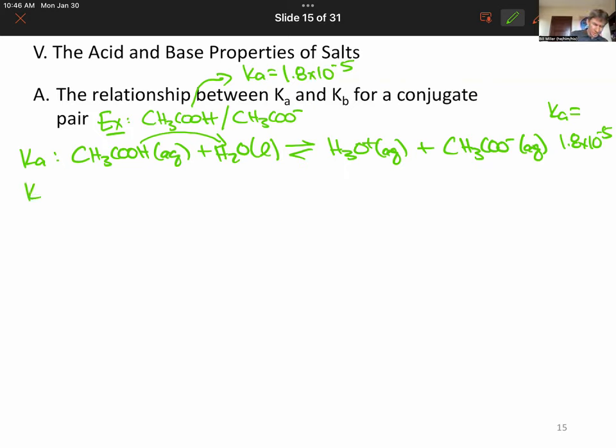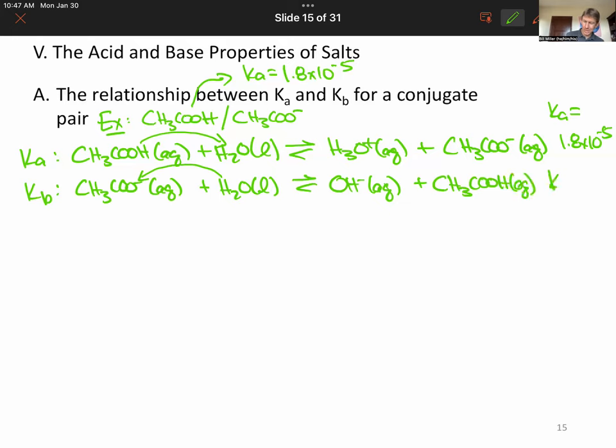Then we're going to write our KB reaction for our acetate. I'm just going to go CH3COO minus. There's a minus in there next to that O. Always add water. This time we transfer the proton the other way. It's going to be OH minus. And now we return our acetic acid. And our KB is a question mark.